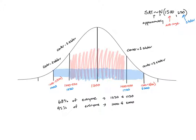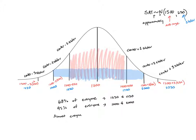Finally, we go three standard deviations out — the center plus three times the standard deviation, and the center minus three times the standard deviation. Plugging in the numbers: 1500 plus three times 250 gives 2250, and 1500 minus three times 250 gives 750. This tells us that almost everyone on the SAT will score between 750 and 2250. And if someone scores a 500 overall, we'd consider them an outlier because they'd be more than three standard deviations away from the center.